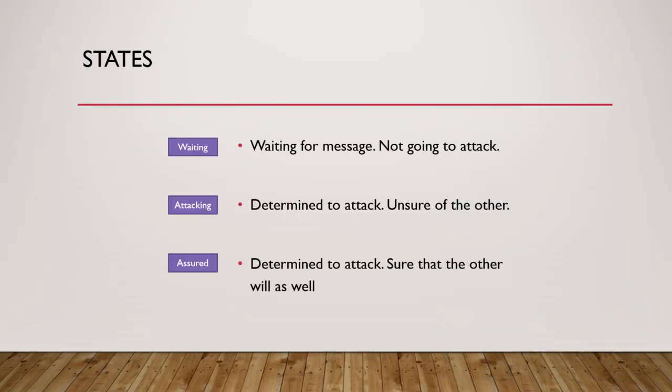Let's talk about the solution. We've got a state machine with three states. First, the 'waiting' state: I have not decided to attack and am simply waiting for a message. Second, the 'attacking' state: I have determined I'm going to attack — it doesn't matter what happens from this point forward. Third, 'assured': I am determined to attack and I am sure that the other general is going to attack as well.